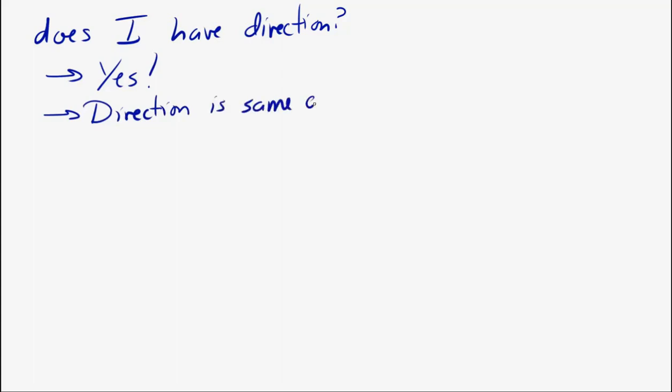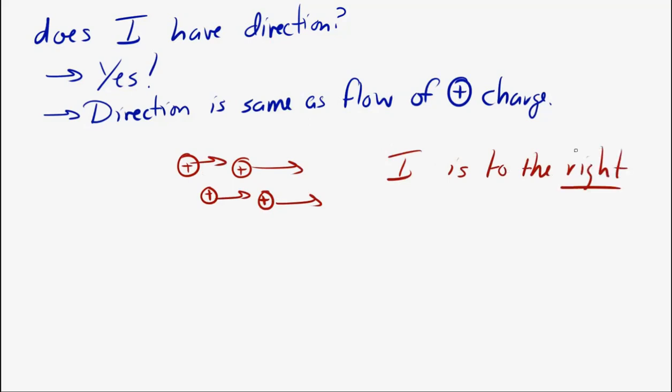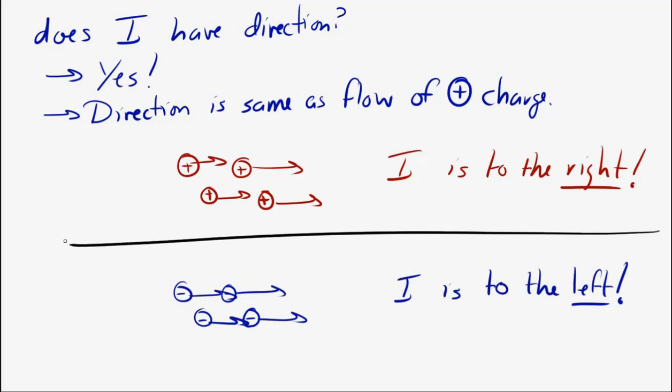So, if you have a bunch of little positive charges, and they're traveling to the right, the current is to the right. The trick is, if you have a bunch of negative charges, and the negative charges are moving to the right, turns out the current is to the left. Because these are negative charges. Current is the direction that positive charges would flow. If negative charges are flowing to the right, then that means positive charges would flow to the left. We'll look at this a little bit more later on.